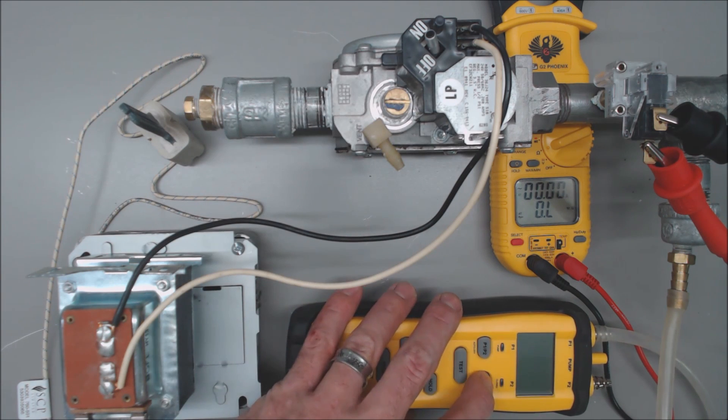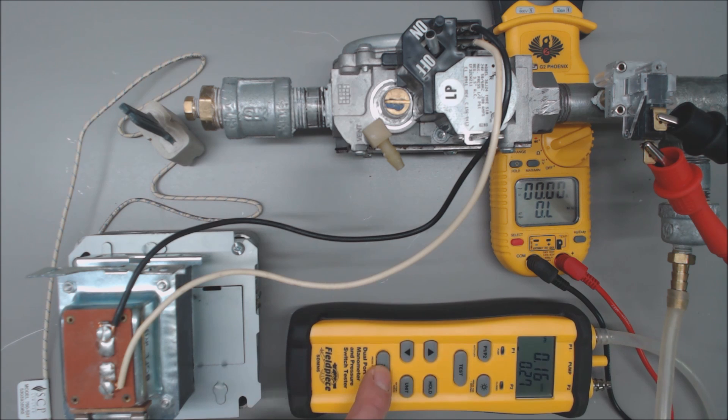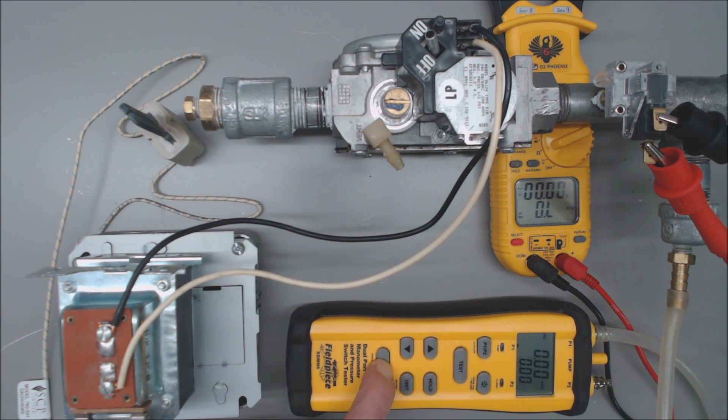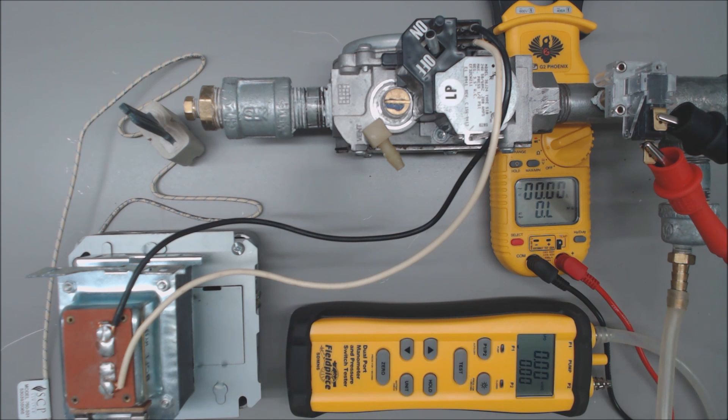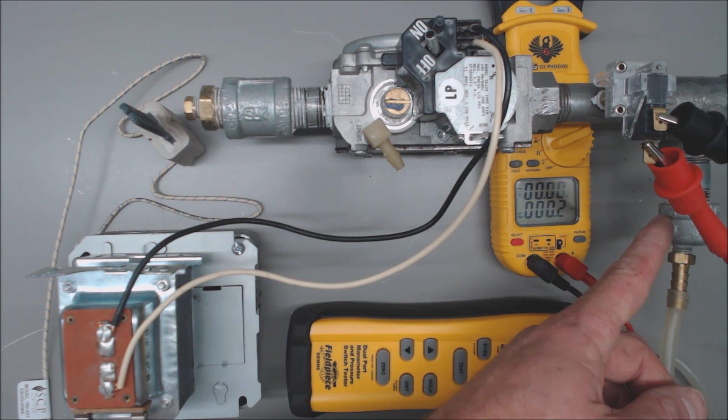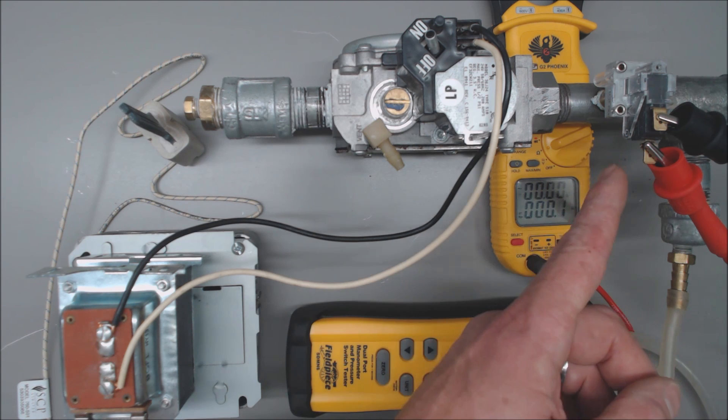We're going to go ahead and turn on our digital manometer and you see that we're reading 0.16 inch water column. We're going to go ahead and zero that out because I just had this gas line open, and now we're going to go ahead and turn on the gas pressure. All right, now that the gas pressure is on we're reading 10.73 inch water column over here on the inlet of the gas valve and you're reading very close to 0.0 ohms of resistance on the pressure switch.